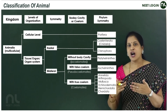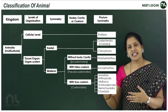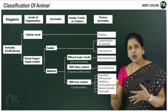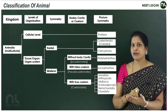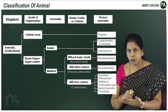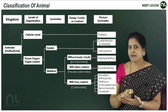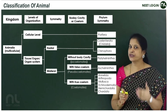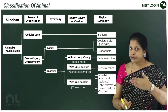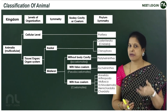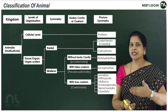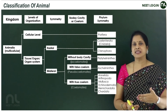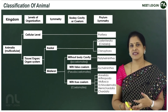The true coelomates at organ system level with bilateral symmetry include the phyla Annelida, Arthropoda, Mollusca, Echinodermata, Hemichordata, and Chordata. The animals with the first true coelom are annelids. The first triploblastic animals are Platyhelminthes. The first animals with tissues are cnidarians. The earliest, most primitive animals are sponges.